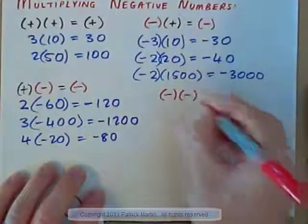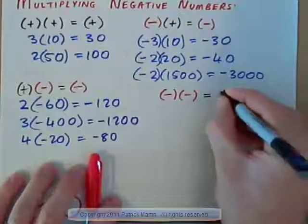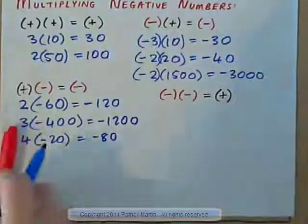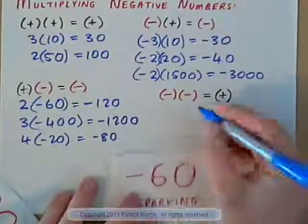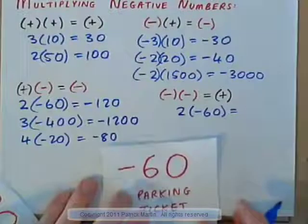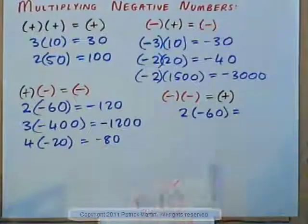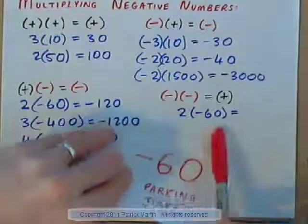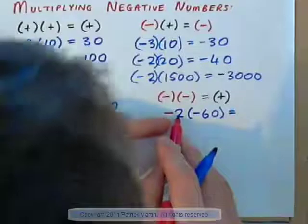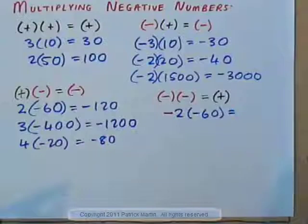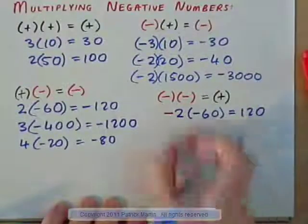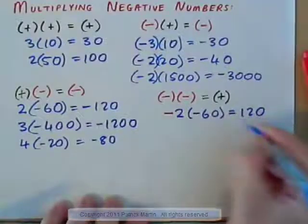Now, the one we've all been waiting for: a negative times a negative is actually equal to a positive. In this class, we need to understand why that is. Let's go back to our parking ticket of $60. Here's two parking tickets of $60 — two negative 60s — that's definitely negative $120. But what happens if I cancel two parking tickets? That negative means take away. Take away two parking tickets of $60 each — well, wouldn't you be happy about that? Would you be about $120 happy? That makes sense, doesn't it?